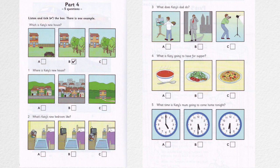5. What time is Katie's mum going to come home tonight? Where does your mum work, Katie? She works in a shop. She usually comes home at 5 o'clock, but tonight she's going to be late. Why is that? On Thursdays, the shop closes at 6 o'clock, so she gets home at half past 6.